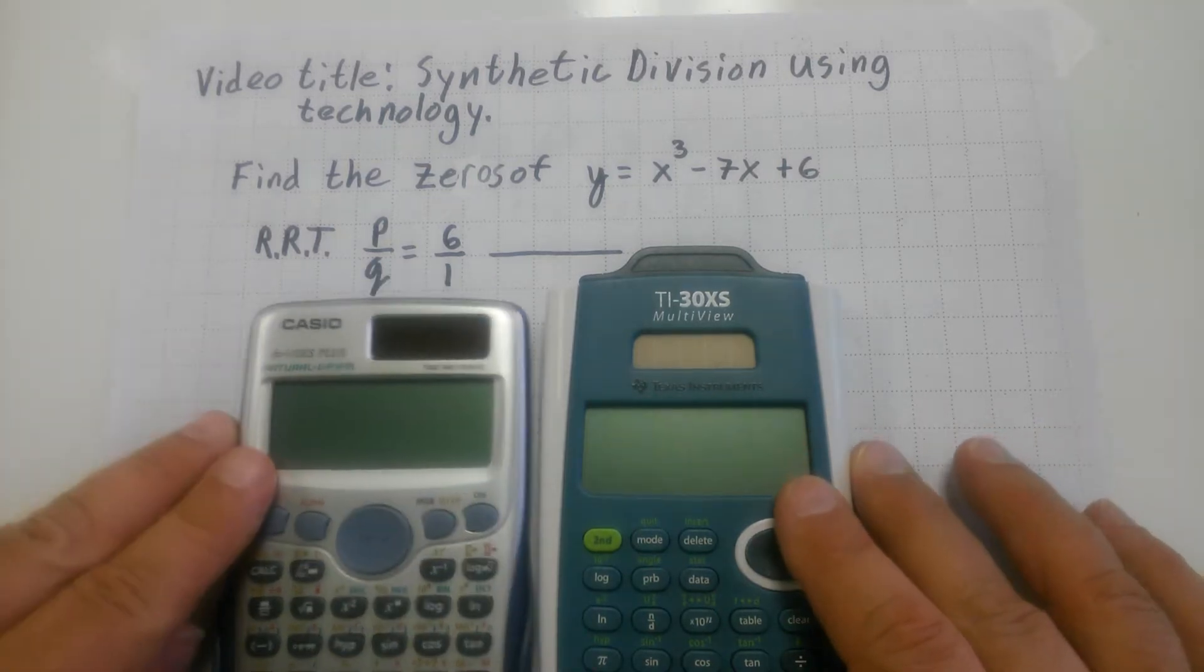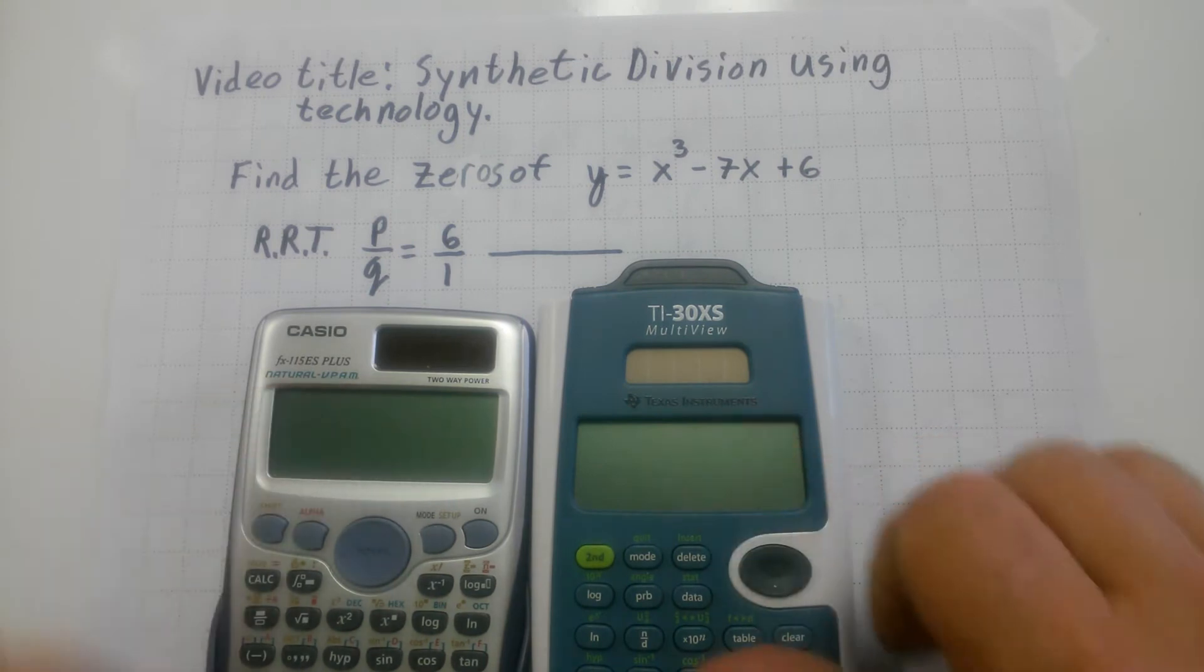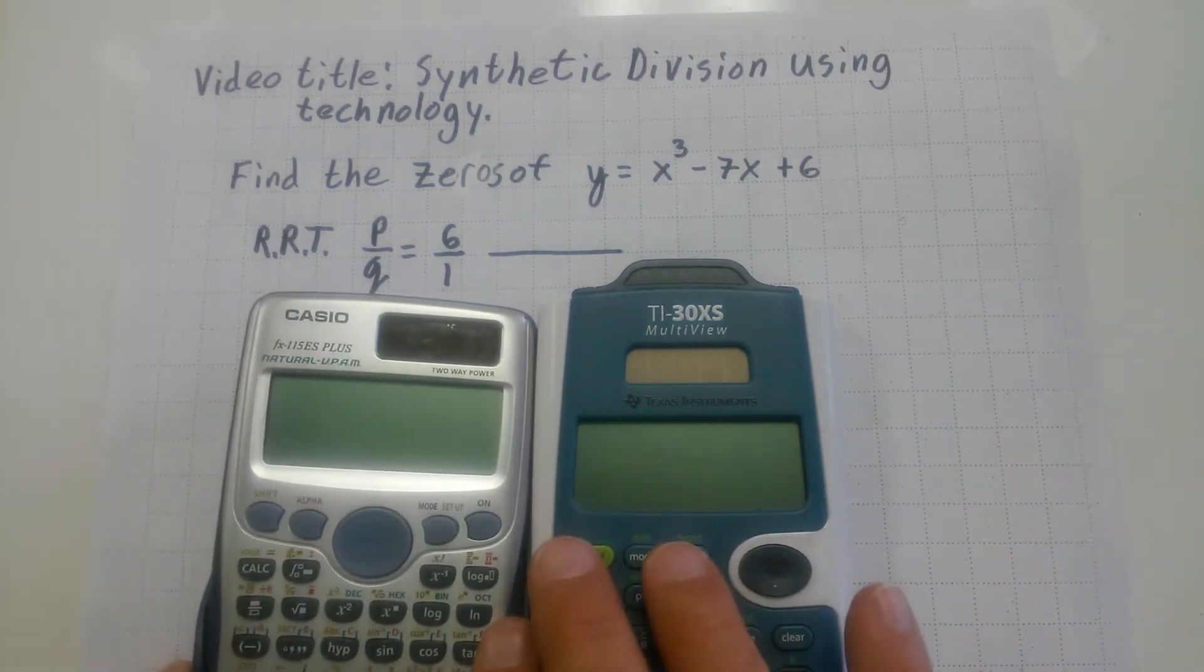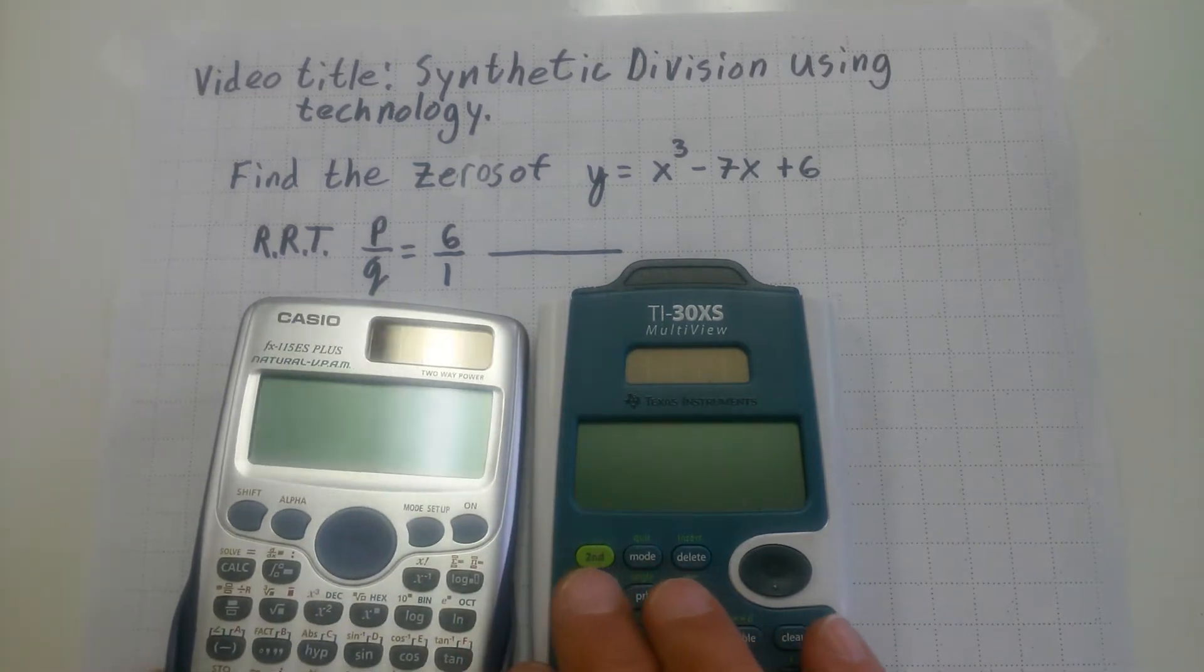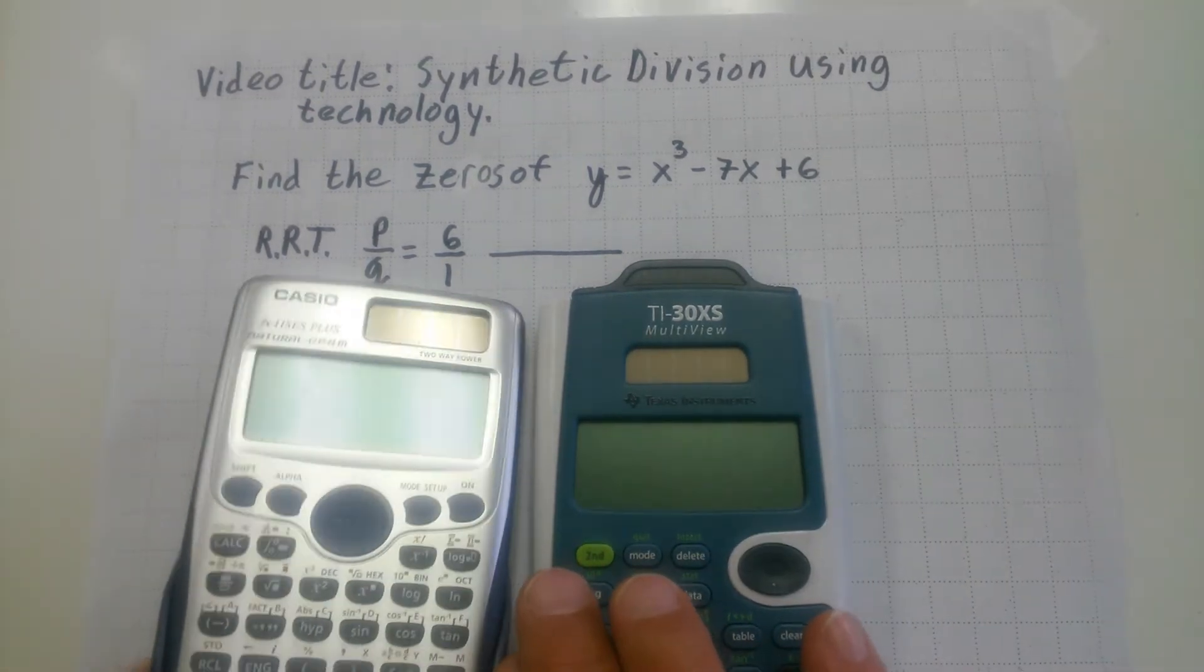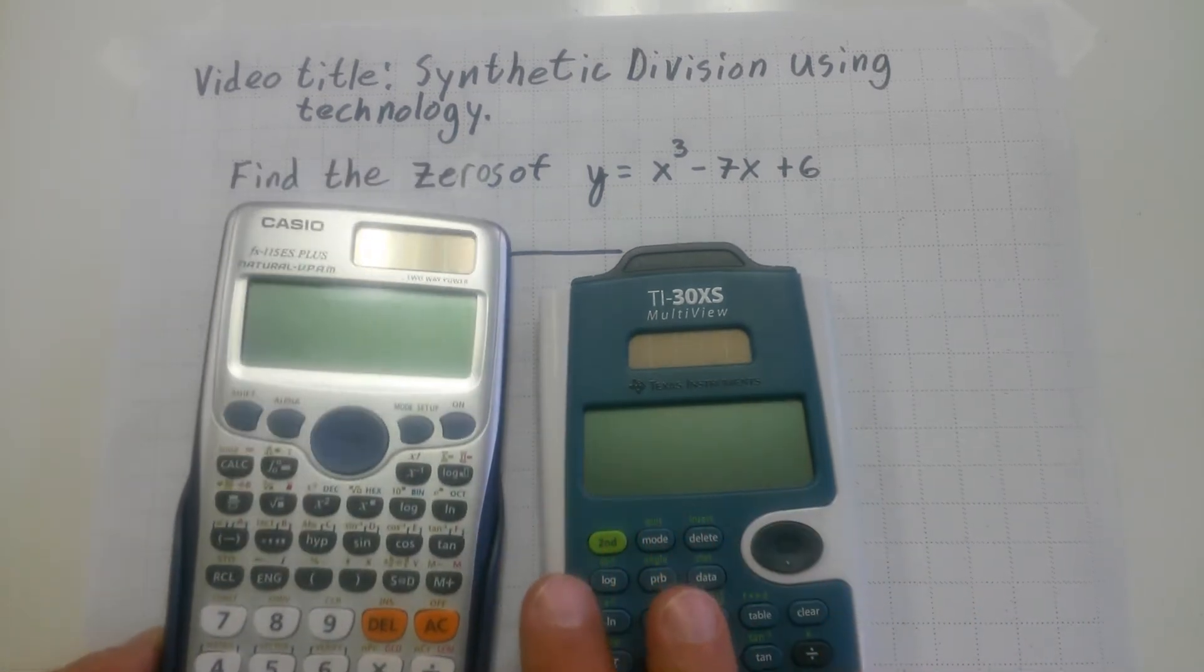So I'm going to find the zeros of this polynomial with either of these, the Casio FX-115ES Plus, really good calculator, really sturdy, very versatile, does a lot. It's a workhorse.